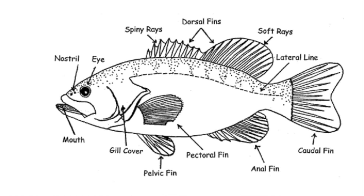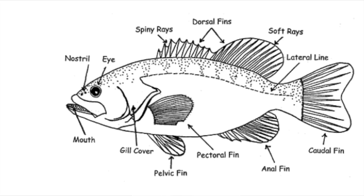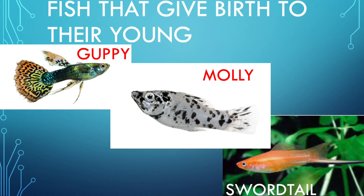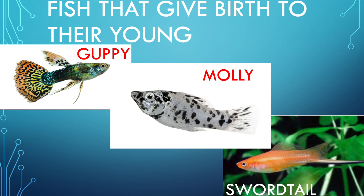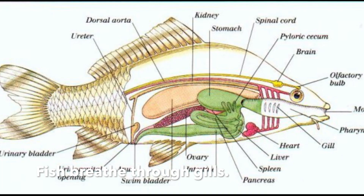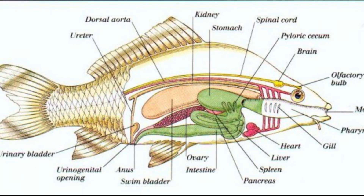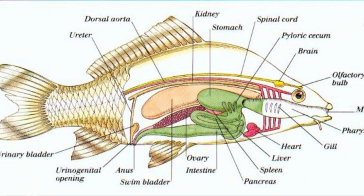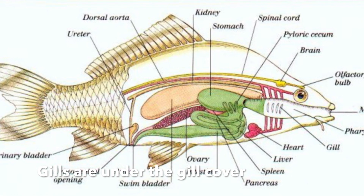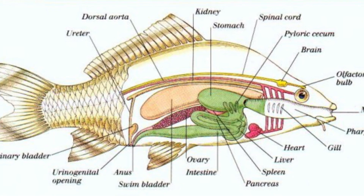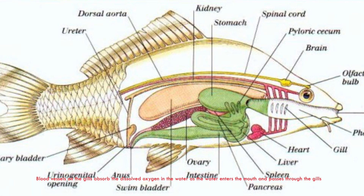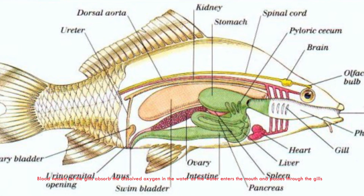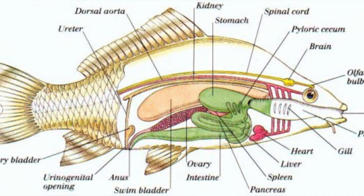Most fish reproduce by laying eggs. The guppy, molly and swordtail are examples of fish that give birth to their young. Fish breathe through gills, which are under the gill cover. Blood vessels on the gills absorb the dissolved oxygen in the water as the water enters the mouth and passes through the gills.